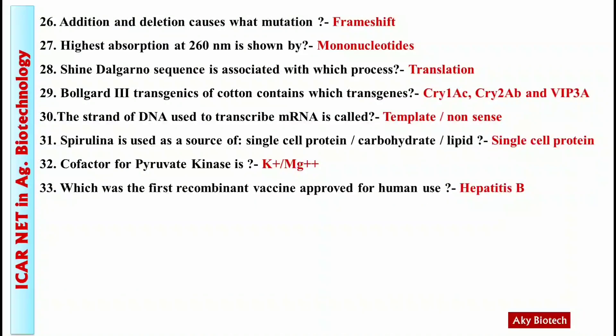Question 33: Which was the first recombinant vaccine approved for human use? Answer: Hepatitis B vaccine.